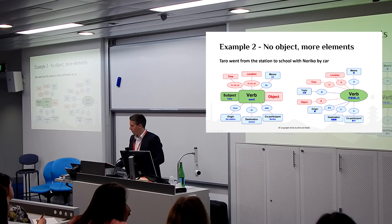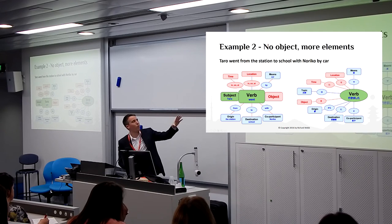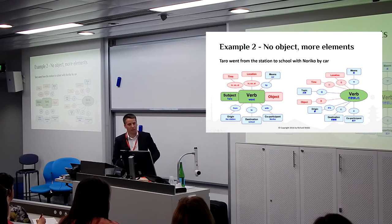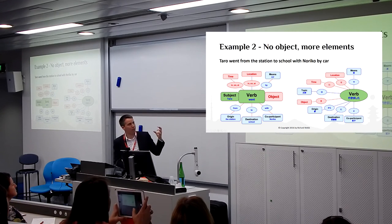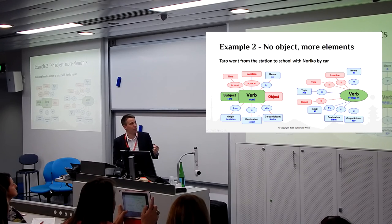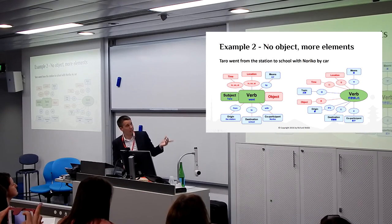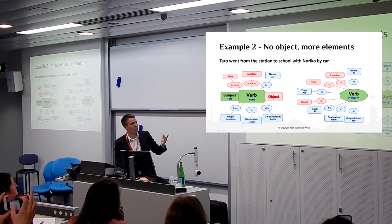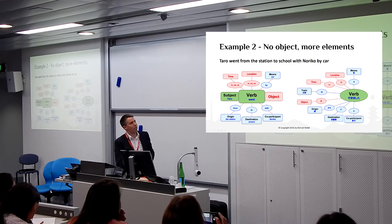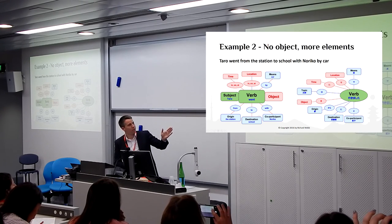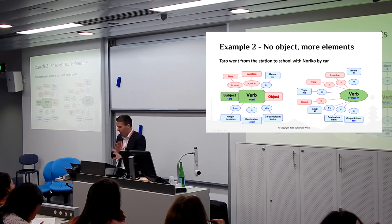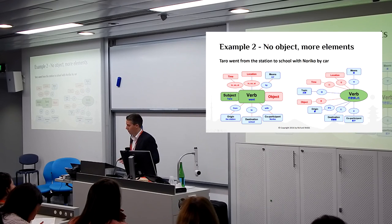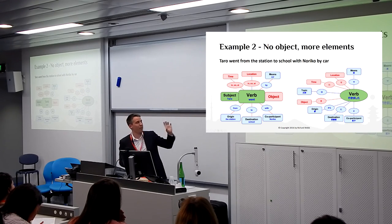Another example, which is a little bit different: Taro went from the station to school with Noriko by car. There are more elements here but there's no object. In English we can leave out the object because there isn't one, but the same thing still applies — Taro went, word order tells us what it means. All of the other elements in English are related by prepositions, and the order of those doesn't really matter. We can say 'Taro went by car from the station to school with Noriko' or rearrange to any other order. But we must keep subject and verb together.